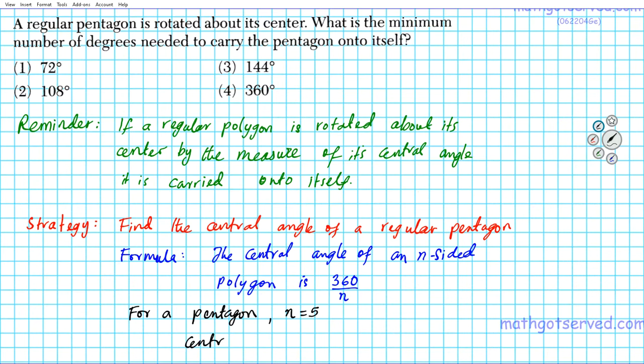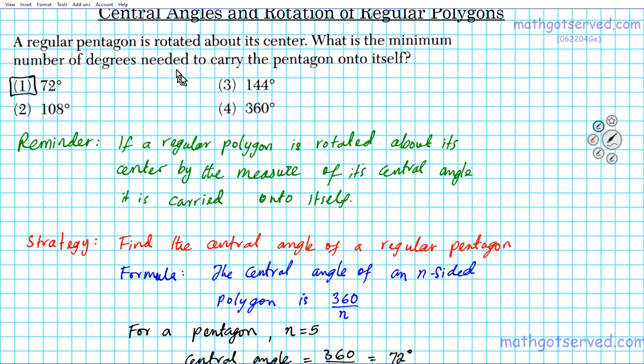So what is the central angle of a pentagon? The central angle of a pentagon is 360 divided by n, 360 divided by 5. If you do the calculations, that is 72 degrees. So the minimum number of degrees needed to carry a pentagon onto itself when you rotate it about its center is 72 degrees.